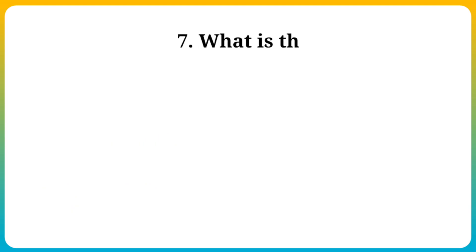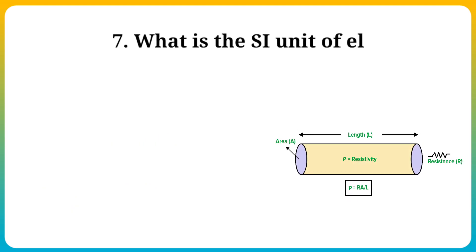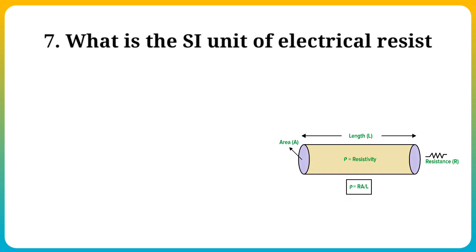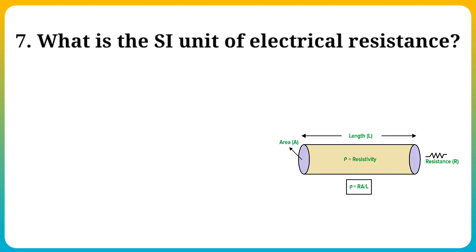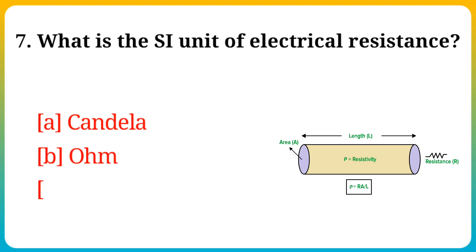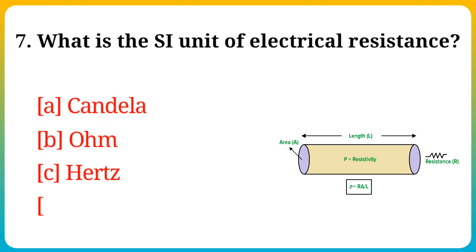Question number 7. What is the SI unit of electrical resistance? Option A: Candela, B: Ohm, C: Hertz, D: Radian.